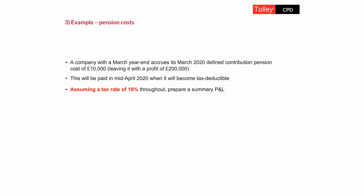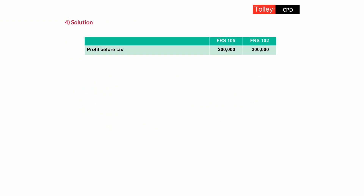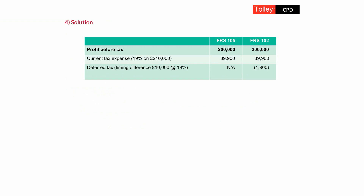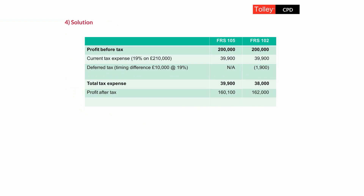First, we'll assume a tax rate of 19% forever in this example. The accounting profit before tax in both cases is £200,000. The tax profit requires us to add back the £10,000 of accrued pension costs, so current tax expense is 19% of £210,000 — that's £39,900. Under FRS 105, no deferred tax is booked. Under FRS 102, we book a deferred tax asset and credit to the tax expense of 19% of £10,000 — giving £1,900. This gives a total tax expense under FRS 105 of £39,900 and under FRS 102 of £38,000, with profit after tax of £160,100 and £162,000 respectively.